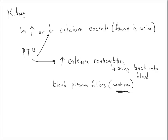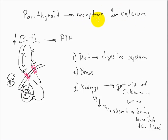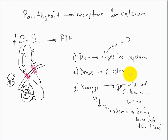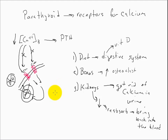So the parathyroid hormone, because it has receptors in many different tissues, can change the digestive system through active communication with vitamin D, increase osteoclast activity in the bones to break them down and release calcium, and cause the kidneys to reabsorb calcium back into the blood. Once calcium returns to its normal level, the whole system turns off. Hopefully you can extrapolate this to other types of hormones to predict what they're going to do.